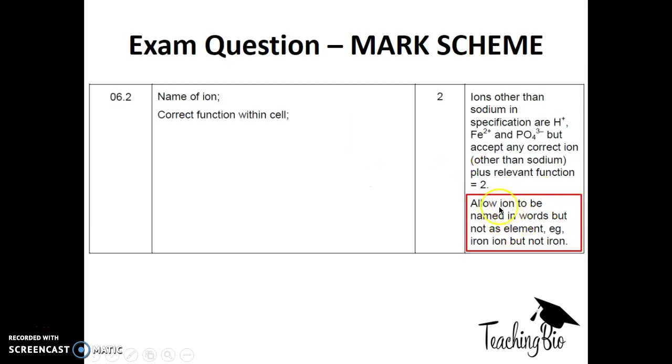Here's the mark scheme. See here, it says allow ion to be named in words but not as element. For example, iron ion but not iron. So that was what I was trying to say before. And here, look: it's Fe2+ and PO43-. You have to get those charges correct.